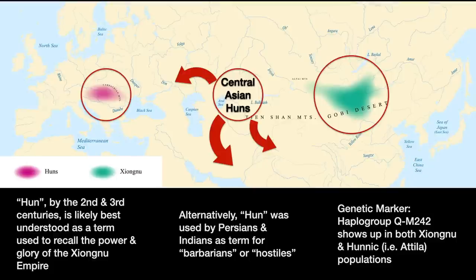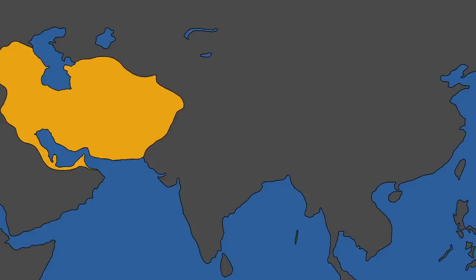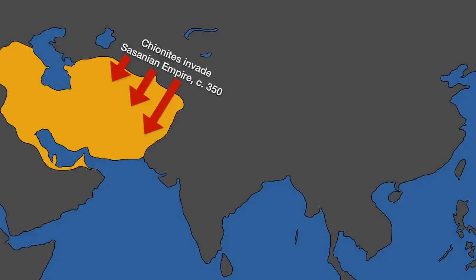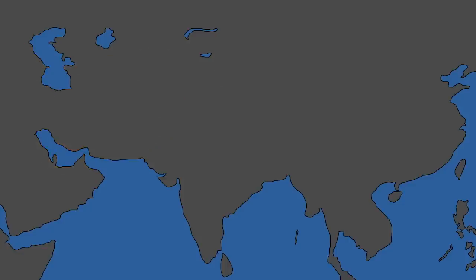In doing so, the Kushan Empire was destroyed, the Sasanian Empire found itself in a subordinate position, and the Gupta Empire eventually met its end. According to the Roman historian Ammianus Marcellinus, around 350 the Sasanian Empire came under attack by a group of people he called the Kayanites, or Chayanites. Shapur II apparently defeated them, or at least brought them to the table, and he then apparently used these people in an attack on Roman border towns.